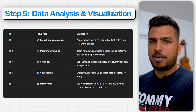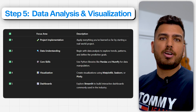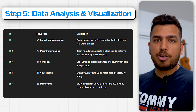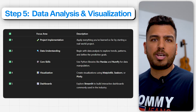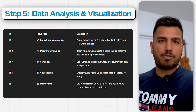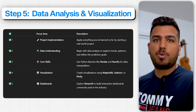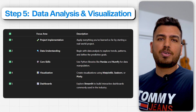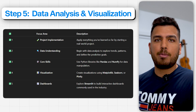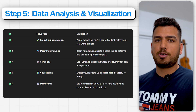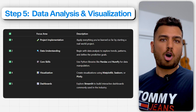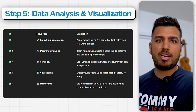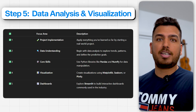Number five is data analysis and visualization. This is when you implement what you've learned so far in the form of a project. Before you start creating models, you'll need to understand what's in your data, what common trends and patterns you've found, and what kind of predictive analysis you'll need to do. Core skills start with Pandas and NumPy, and eventually you'll create visualizations using libraries like Matplotlib, Seaborn, or Plotly. For building dashboards, there's another Python library called Streamlit which is very popular in the industry.